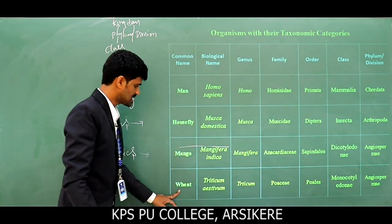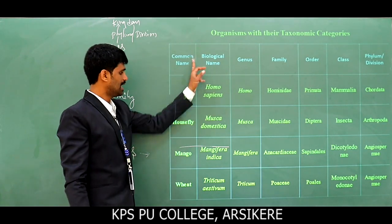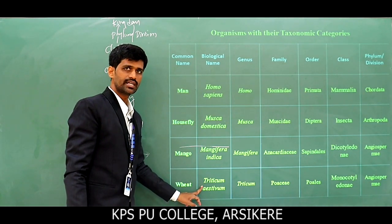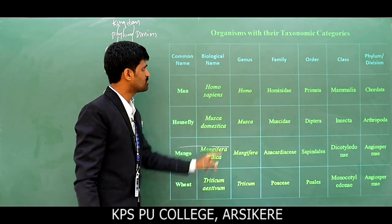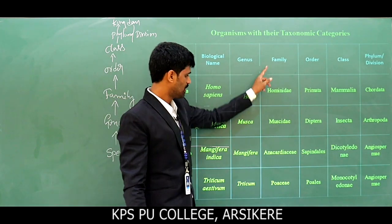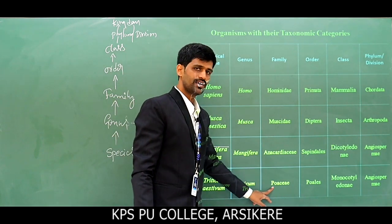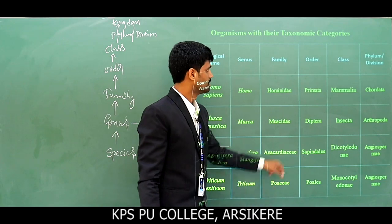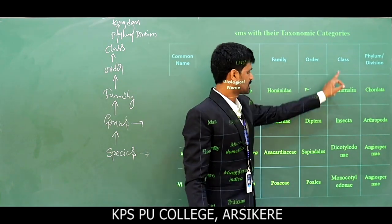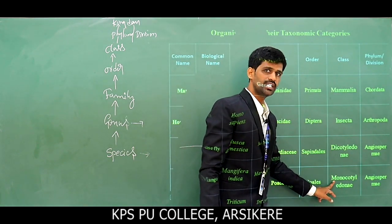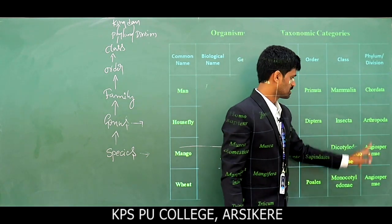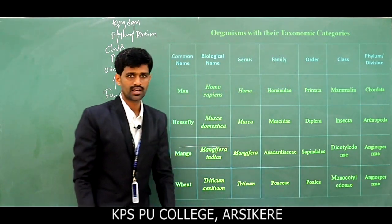Fourth example: common name — Wheat; biological name — Triticum aestivum; genus — Triticum; family — Poaceae; order — Poales; class — Monocotyledinae; division — Angiospermae.